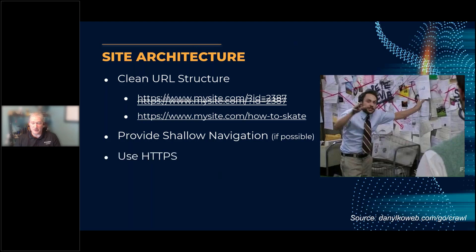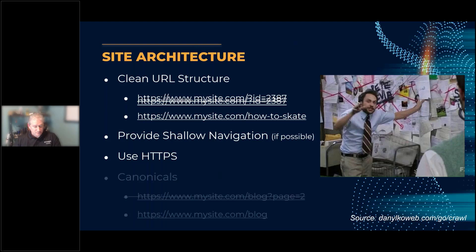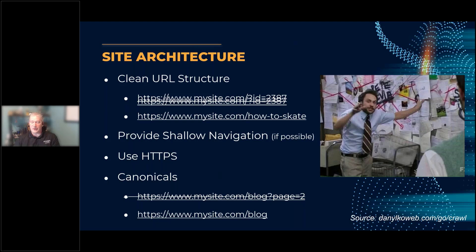Always use HTTPS or SSL. When you visit a site that's not secure, it doesn't feel trustworthy, and search engines won't include your site in results unless it's HTTPS. Also, a canonical URL is the version of a webpage chosen by search engines as the main version of the content, so there are no duplicates. For example, if you had a blog on page two, the canonical would be mysite.com/blog.